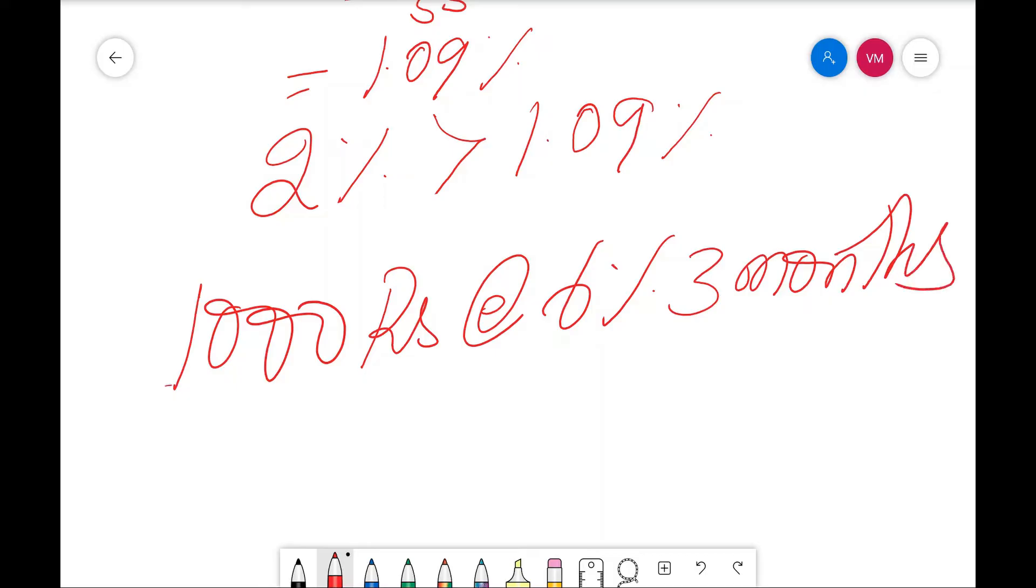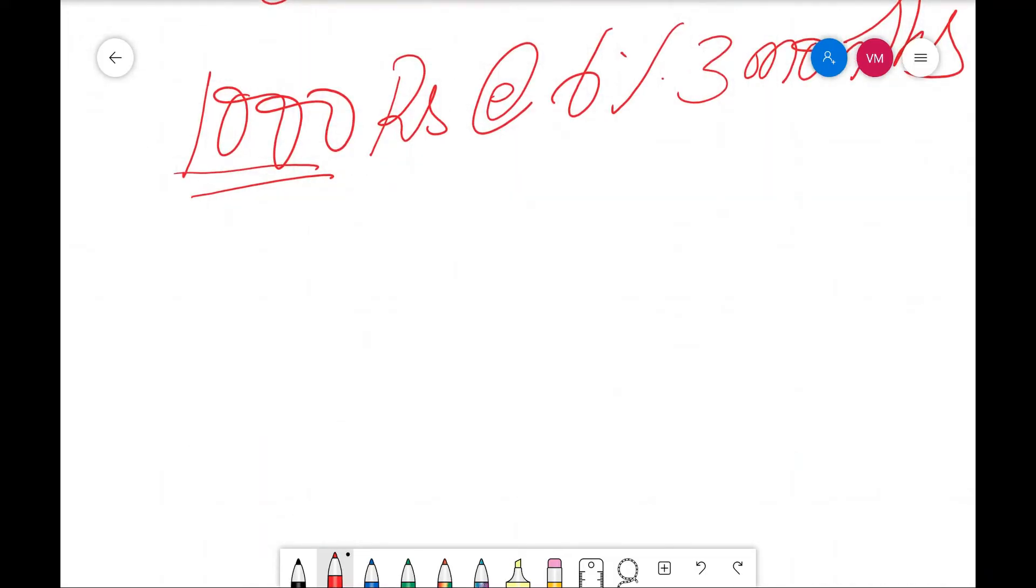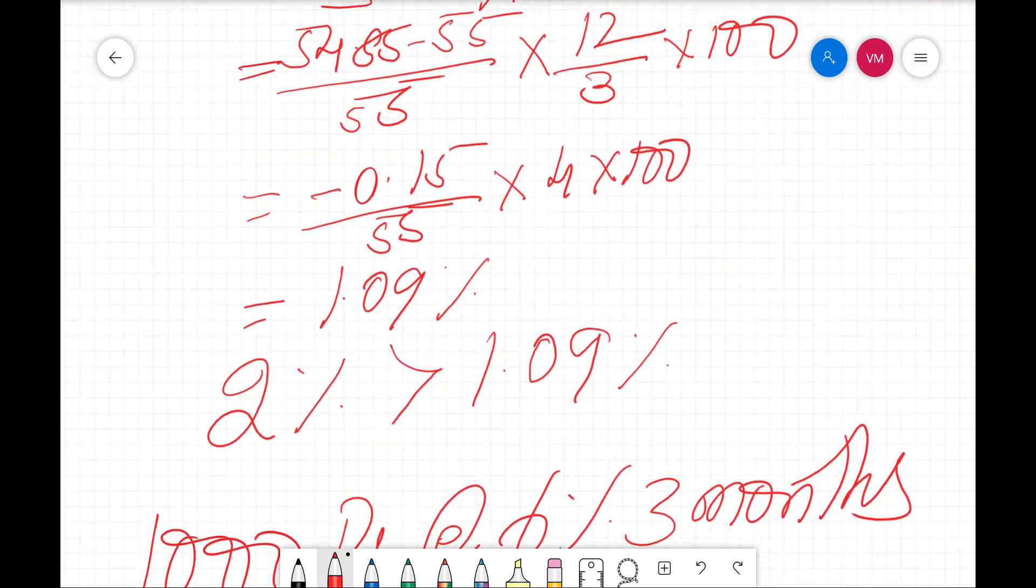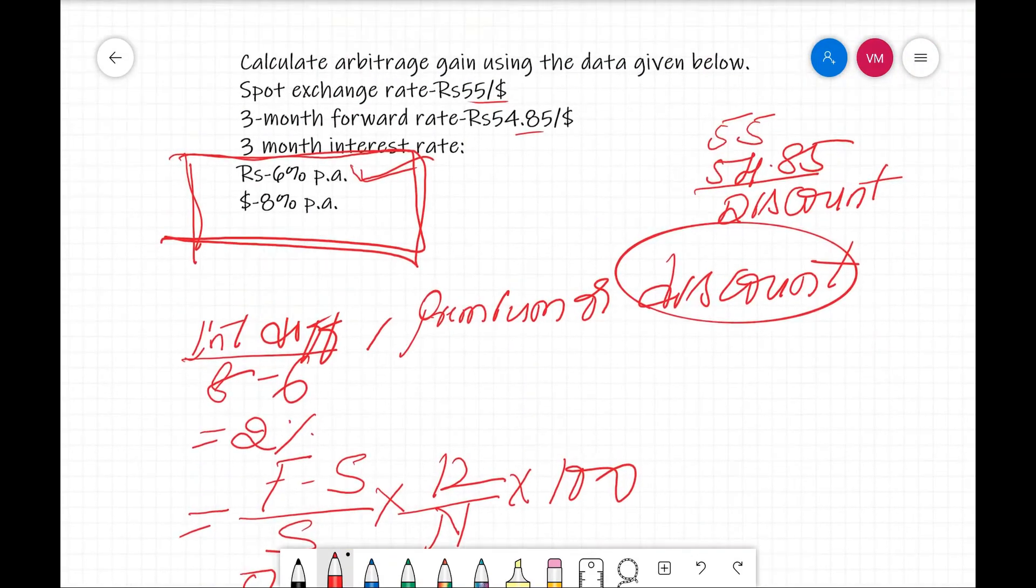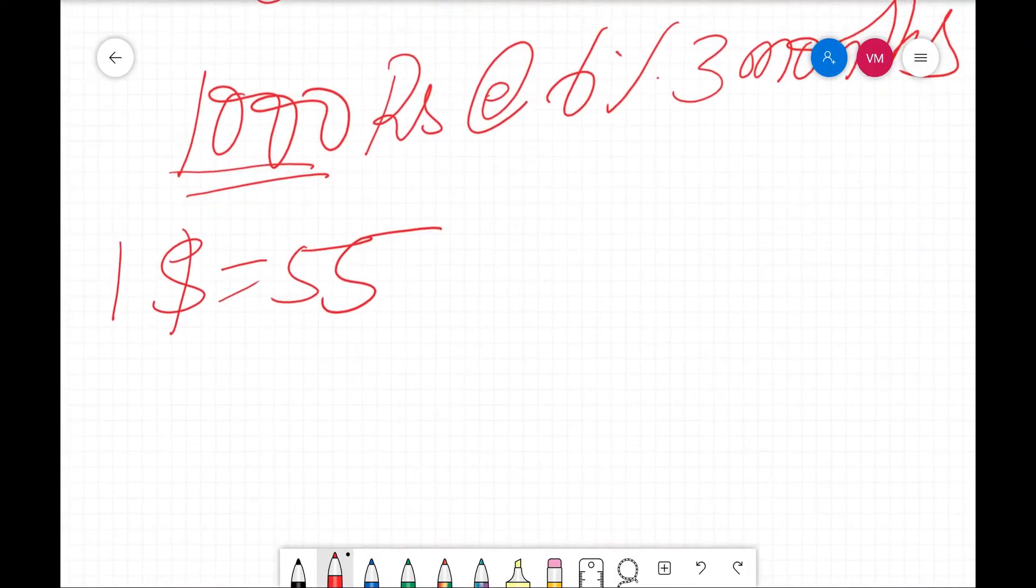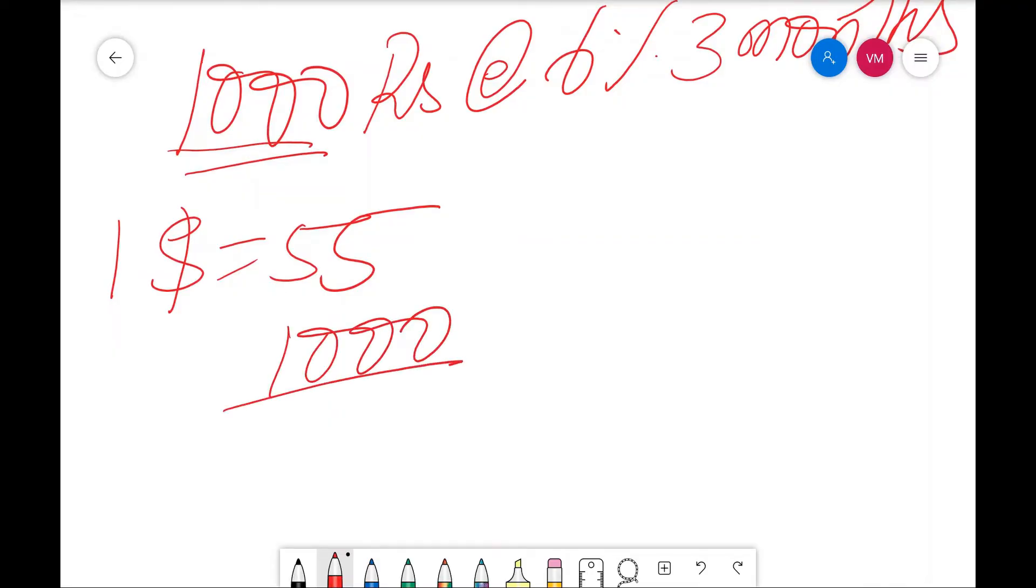With these 1,000 rupees, purchase dollar right now. Right now, 1 dollar is equal to 55 because they have given in the spot market. 1 dollar is 55 rupees. So, I can purchase how many dollars? 1,000 divided by 55. That is 18.1818 dollars I can purchase right now.